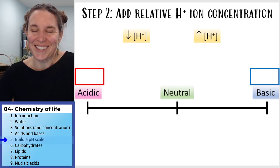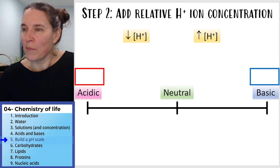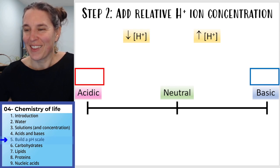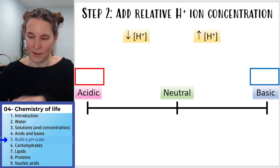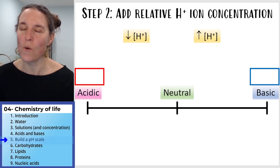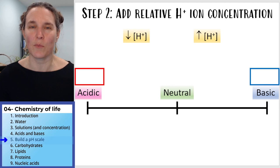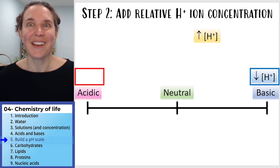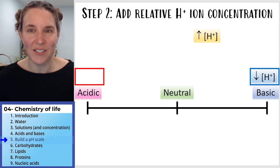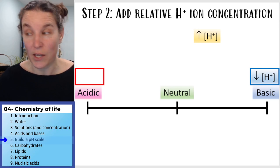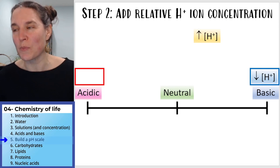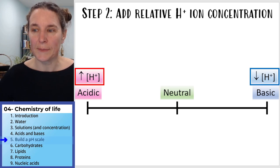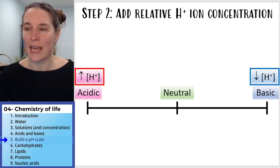Let's see if you agree with me. The low hydrogen ion concentration goes on the basic side. Is that where you put it? I hope so, because that's where it goes. Which means the high hydrogen ion concentration goes on the acidic side. So far this is an easy game, isn't it?